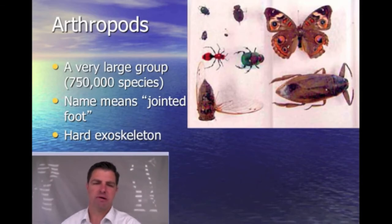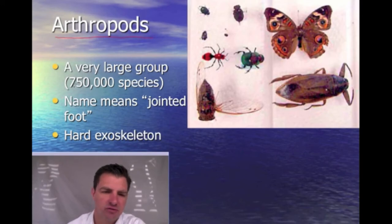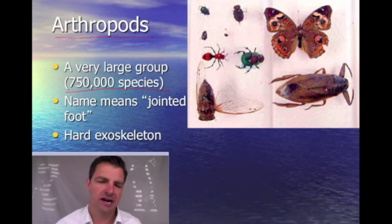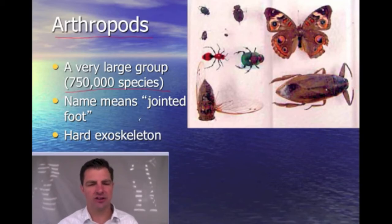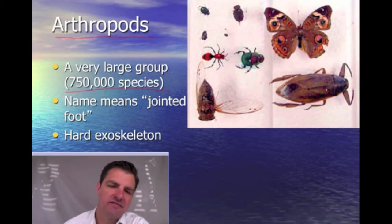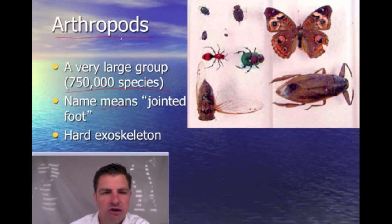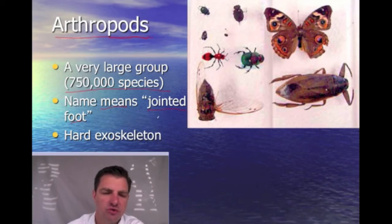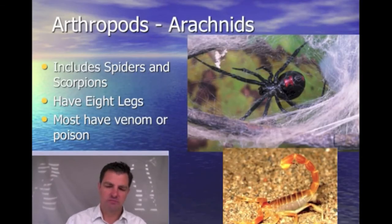The next group are the Arthropoda — the arthropods — a very big group with about three quarters of a million species. This is definitely the largest group of things we've identified so far, though there are probably more bacteria in reality. Their name comes from the idea of having a jointed foot: 'pod' refers to foot and 'arthro,' like arthroscopic, refers to a joint. They have a hard exoskeleton. Within phylum Arthropoda, there are smaller subgroups, like the arachnids.